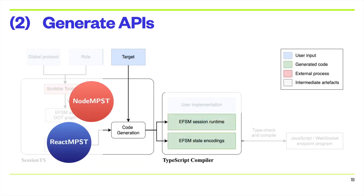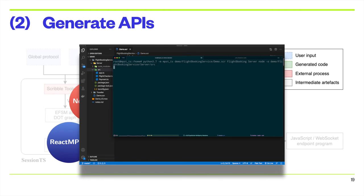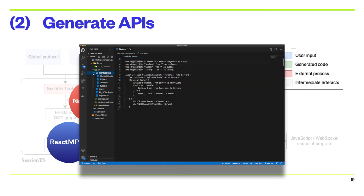Second, the developer specifies the target platform to generate code for, specifically whether the endpoint will run on a Node.js backend or the web browser. We specify that the flight server will run on Node. SessionTS encodes the EFSM accordingly, and generates a set of type-safe APIs and a runtime designed to execute the EFSM on Node.